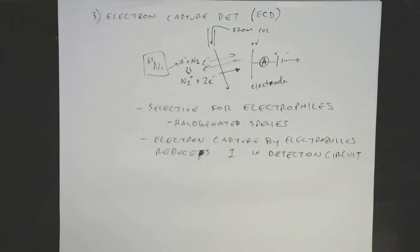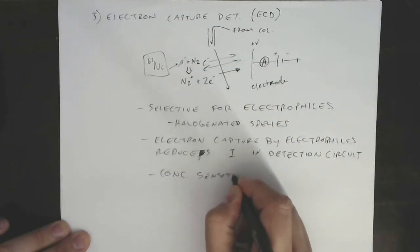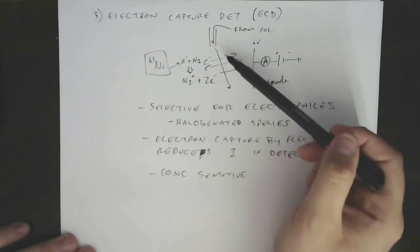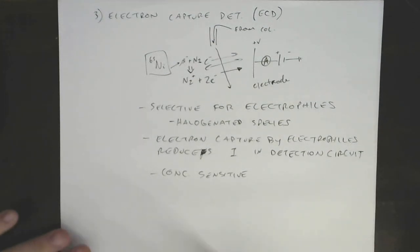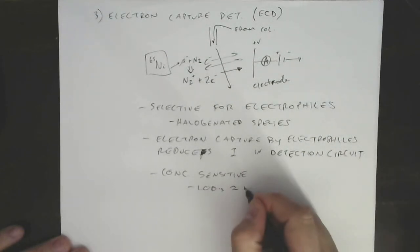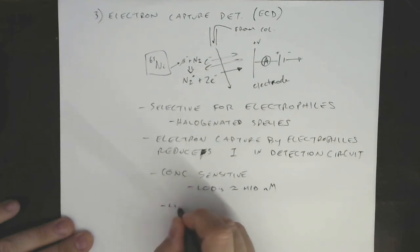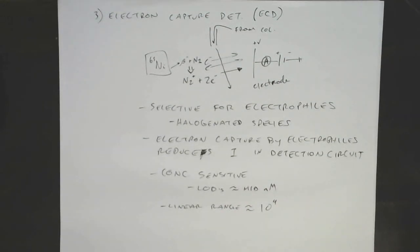ECD is a selective detector, not a universal one, and it's selective for electrophiles — halogenated species being a really common example. This actually contrasts nicely with FID: halogenated species are really hard to burn and hard to oxidize, which is why they have special disposal containers in the lab and can't just go in the incinerator. So halogenated species are not great for FID, which is why modes like ECD work well for them. It's a concentration-sensitive detector — there's no guarantee every molecule interacts with an electron; you get a representative cross-section. Typical LODs are in the mid-nanomolar range, making it quite sensitive. The weakness is linear range — only about four orders of magnitude, so it's not a very broad methodology.